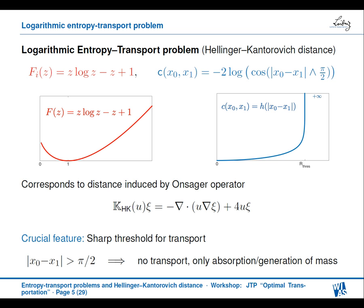An important case for the second part of my talk is when F is the Boltzmann entropy and the cost is the function minus two times the logarithm of the truncated cosine. In particular, if you are above the threshold of π/2 the cost is infinite. I will show later that this example corresponds to a distance called the Hellinger-Kantorovich distance, which is induced by the Onsager operator — the generalization of the Otto calculus. The key point here is that you have a sharp threshold for transport: if two points have distance larger than π/2, there can be no transport between them, only absorption or generation of mass.